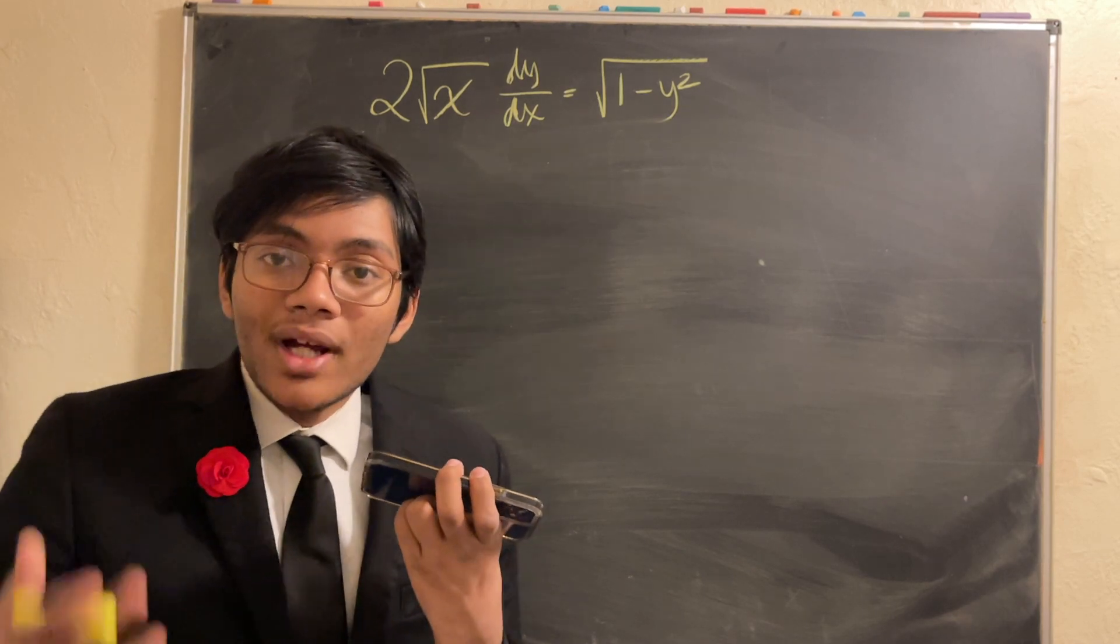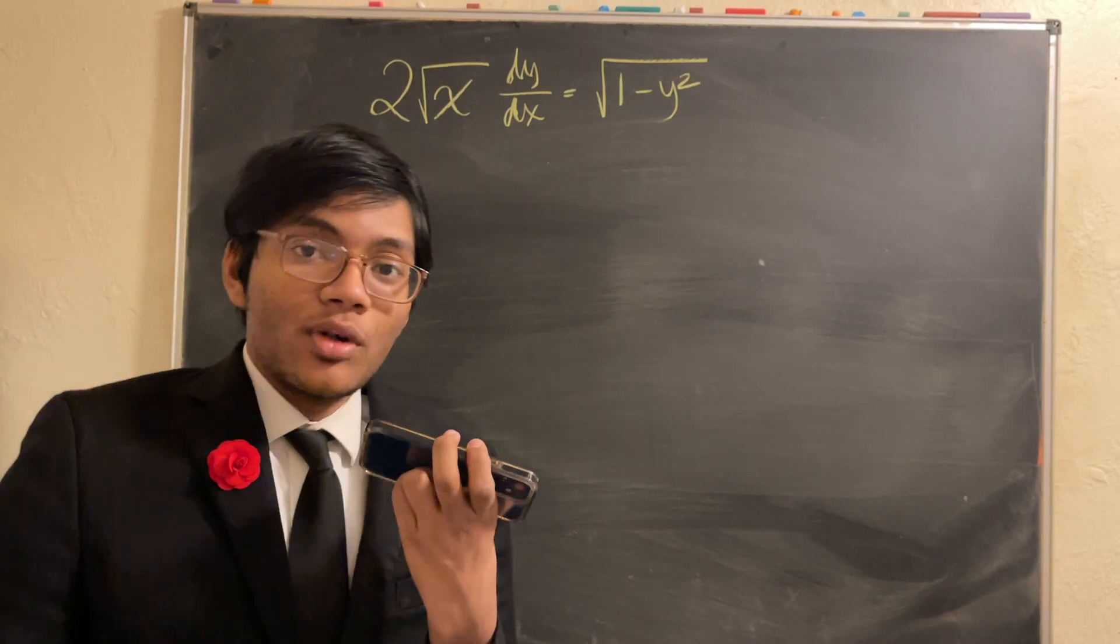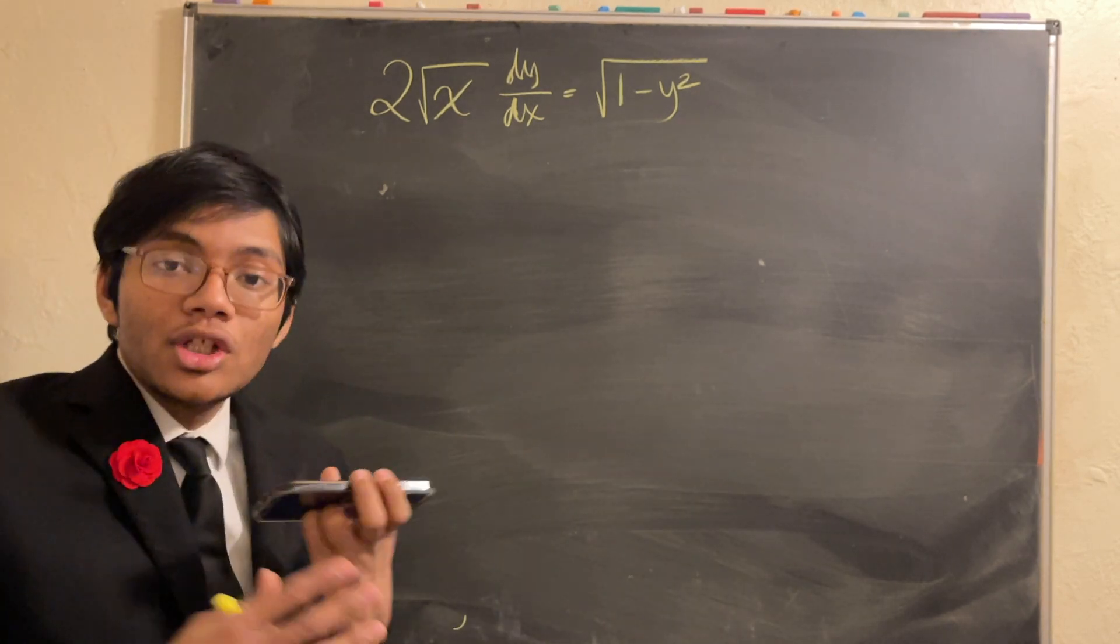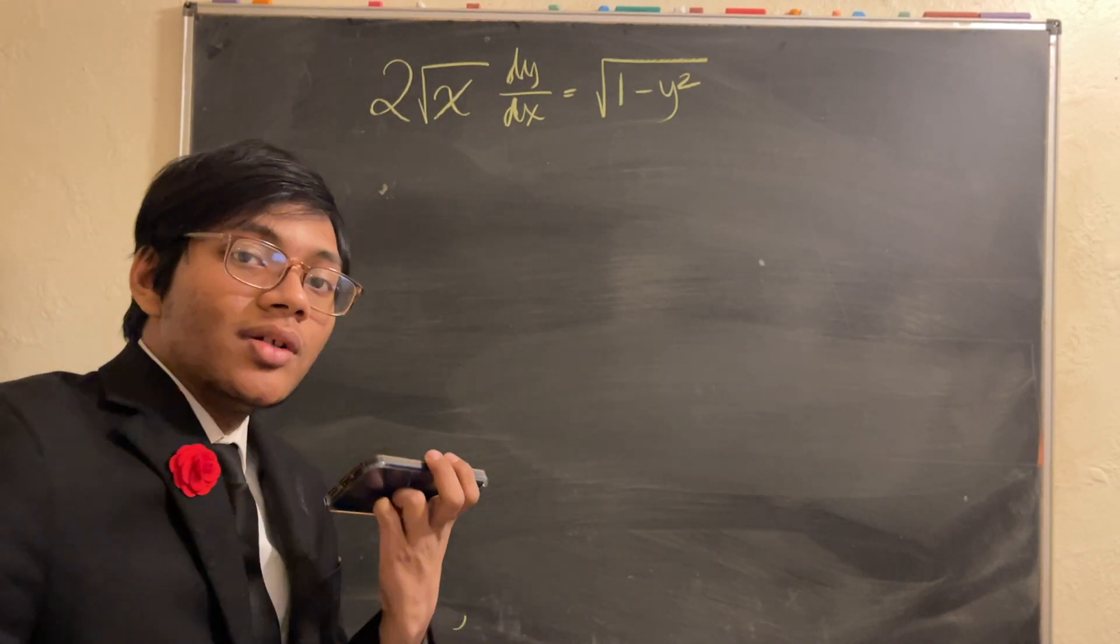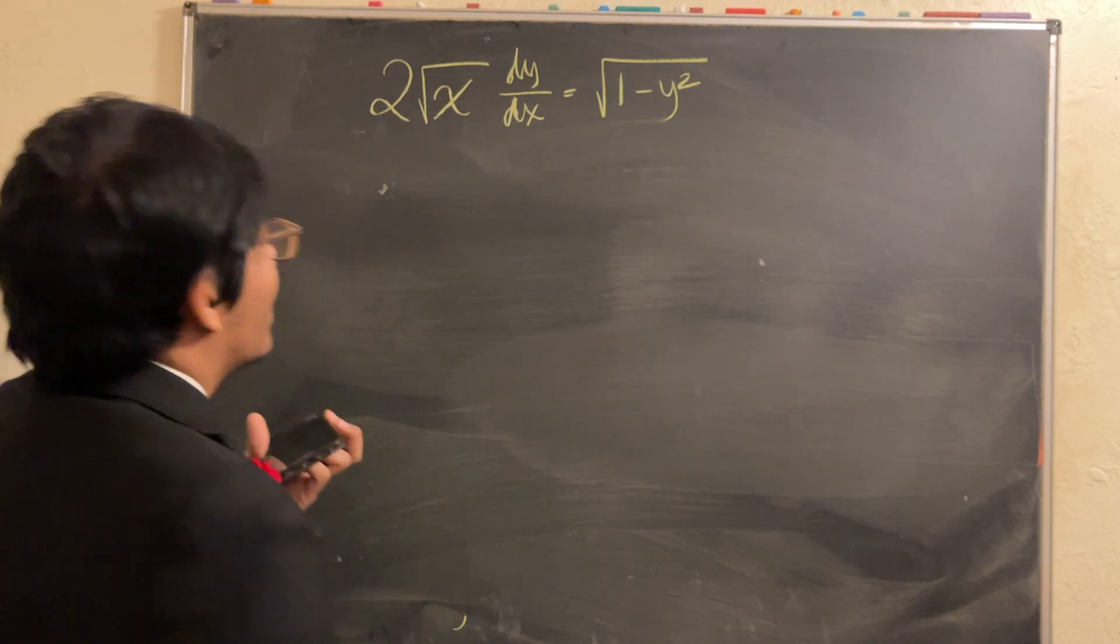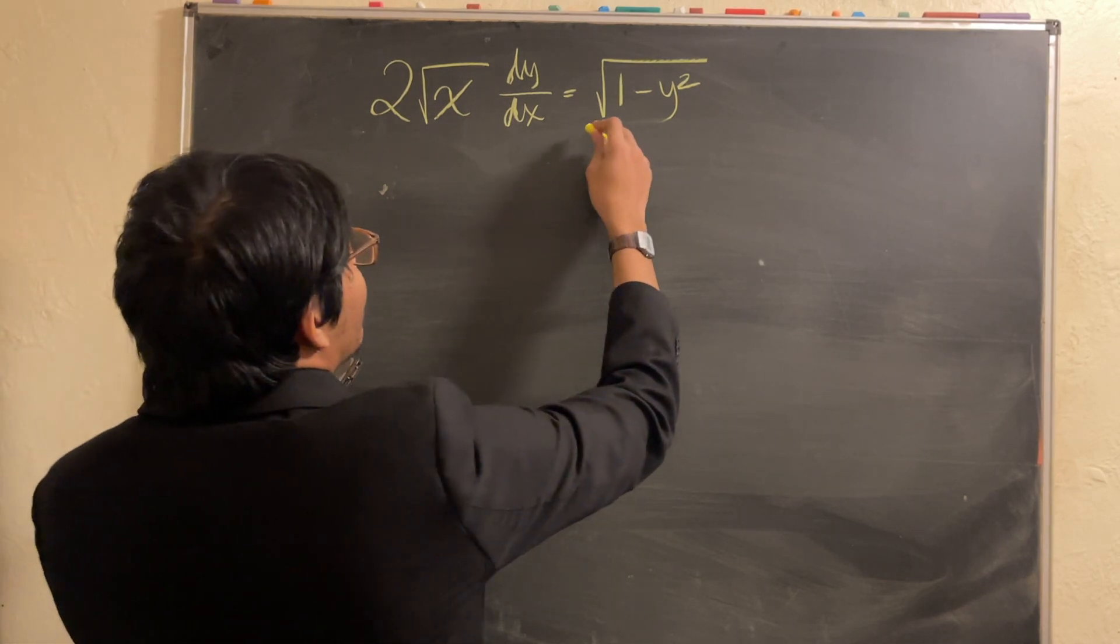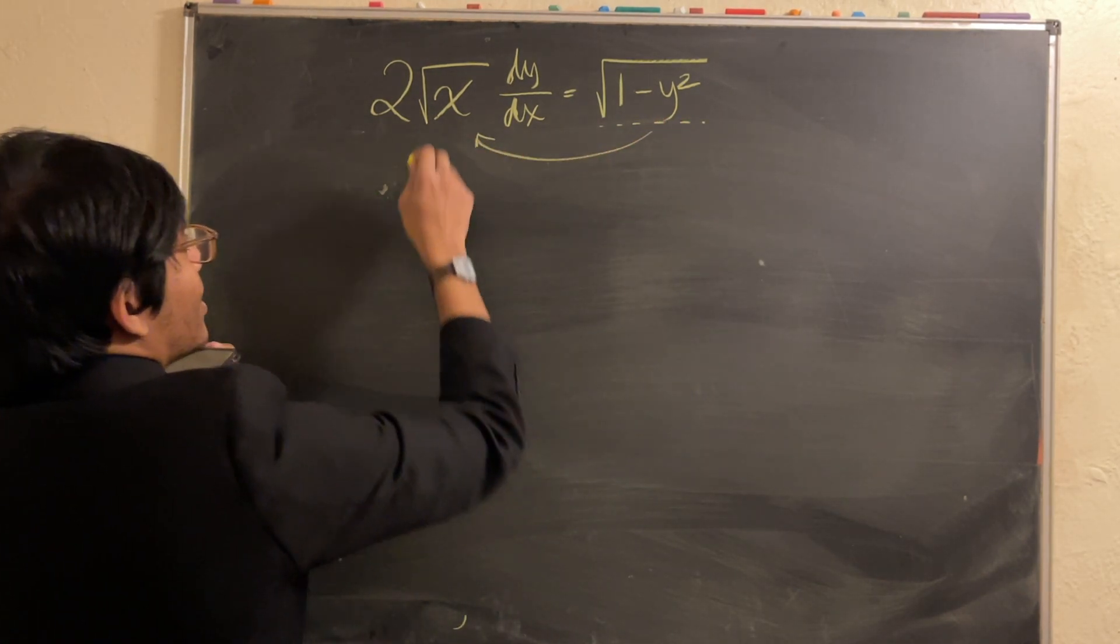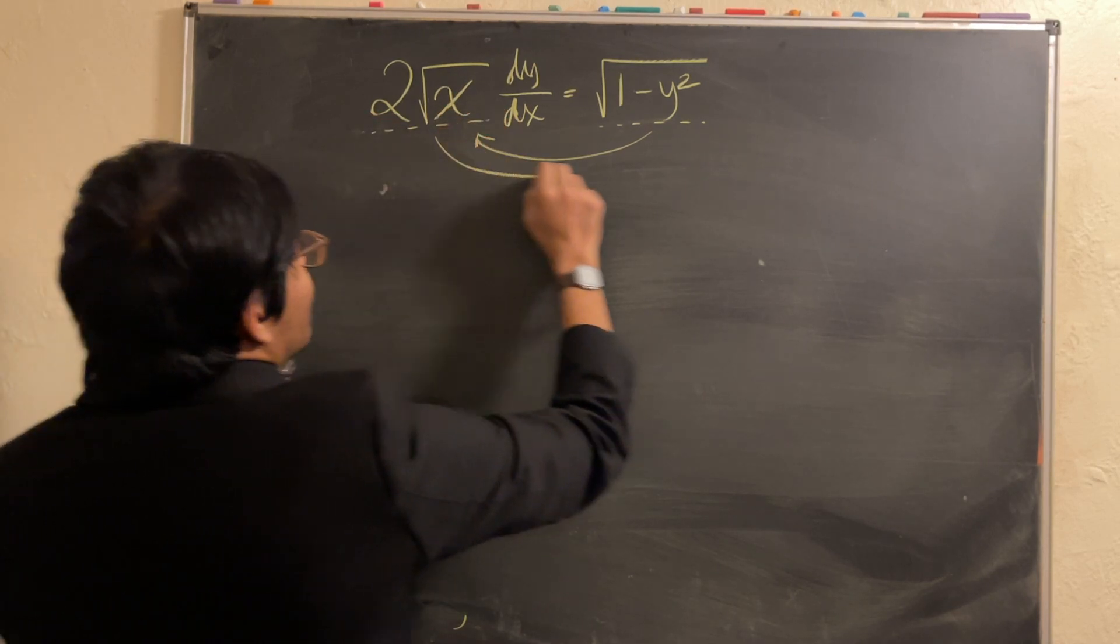Well, the first thing you want to do is recognize the fact that it's separable. In other words, you can separate this equation into two types of variables. Variables of functions that are variables of y and functions that are variables of x. So, let's go ahead and do that. I'm going to move all the functions of y, such as this, to the left-hand side and all the functions of x, such as this, to the right-hand side.